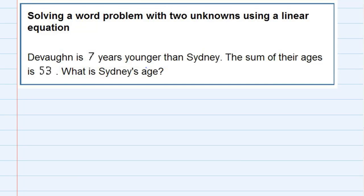Solving a word problem with two unknowns using a linear equation. We're told that Devon is seven years younger than Sydney. The sum of their ages is 53. What is Sydney's age?